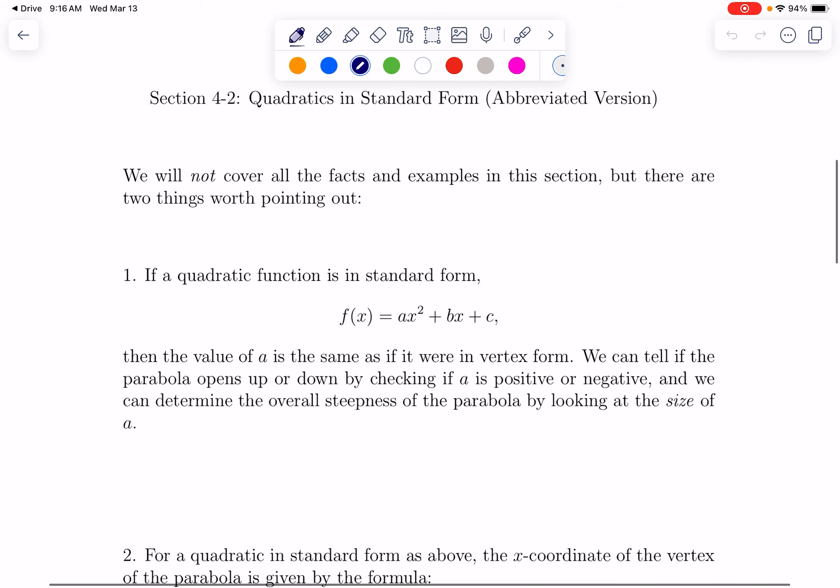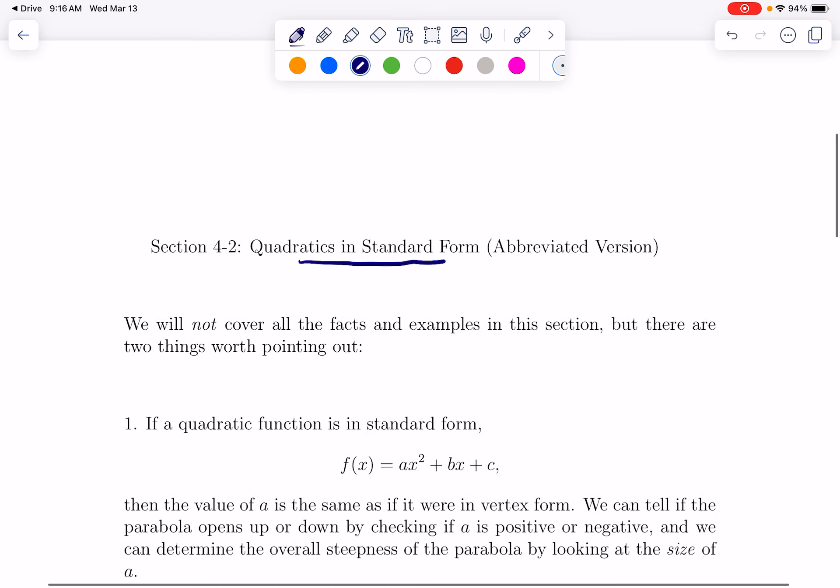So in section 4.2, here are really just the two facts worth knowing. If we have a quadratic in standard form, right, so let's just remember standard form is when we don't have any parentheses or grouping, it's just some multiple of x squared plus some multiple of x plus some constant, where a, b, and c are constants, possibly negative, so it might look like subtraction.